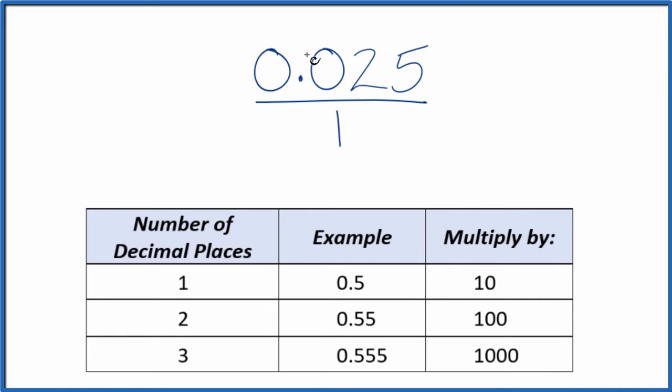What we'd like to do is get this 0.025 to be a whole number, and to do that we could just multiply it by 1,000. That's because we have one, two, three decimal places. With three decimal places, we're going to multiply by 1,000. That'll give us our whole number.